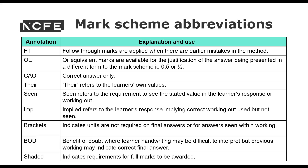When using the mark scheme, it is important that you understand the annotation. FT stands for follow through — follow through marks are applied when there are earlier mistakes in the method. OE stands for or equivalent — these marks are available for the justification of the answer being presented in a different form to the mark scheme, such as 0.5 instead of a half, or a different way of doing an addition, subtraction, or multiplication. CAO is correct answer only. 'Their' refers to the learner's own values, and you'll often see 'their' alongside FT for follow through. An incorrect answer when followed through in the process could still be awarded marks. 'Seen' refers to the requirement to see the stated value in the learner's response or working out.